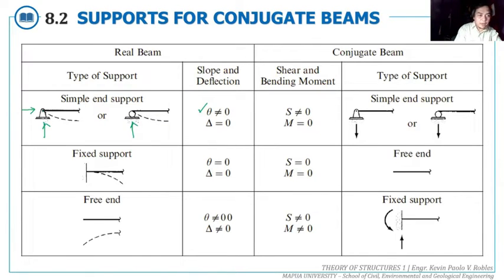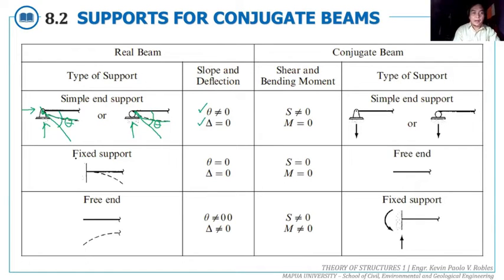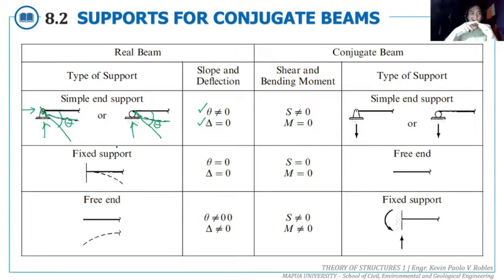For deflection at a hinge or roller support, since the support prevents vertical movement, the deflection is zero — the beam stays at the same position before and after loading. So at a hinge or roller, theta (slope) is not equal to zero, but the deflection is zero.